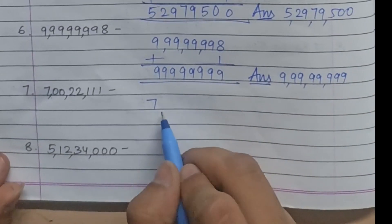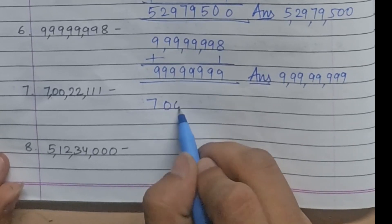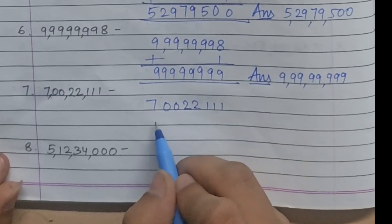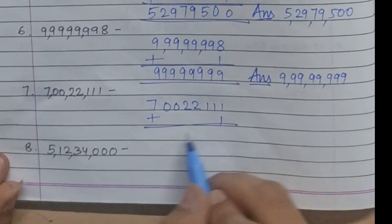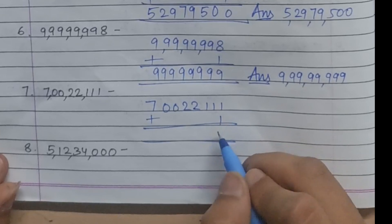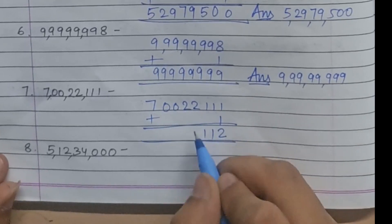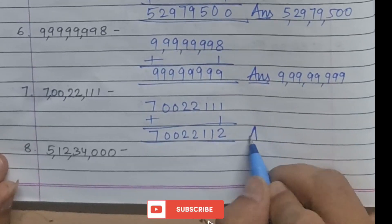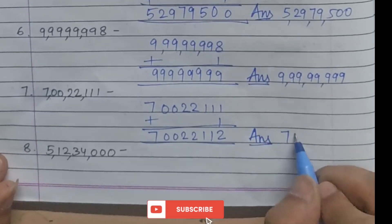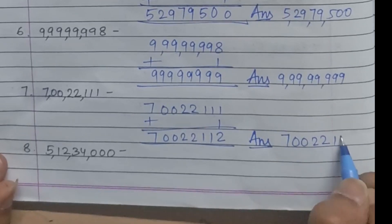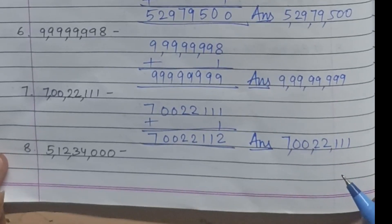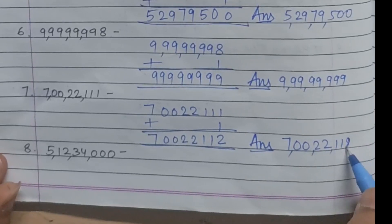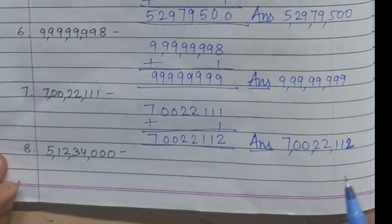Next question: the successor of 7,00,22,111. Add 1. 1 plus 1 is 2, then 1, 1, 2, 2, 0, 0, 7. The answer is 7,00,22,112.